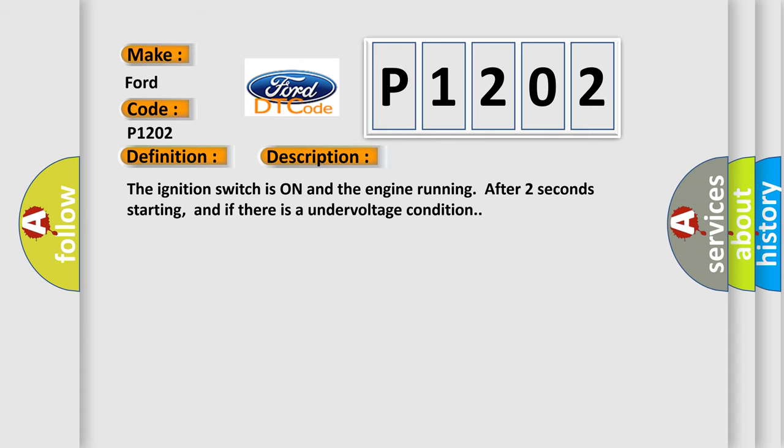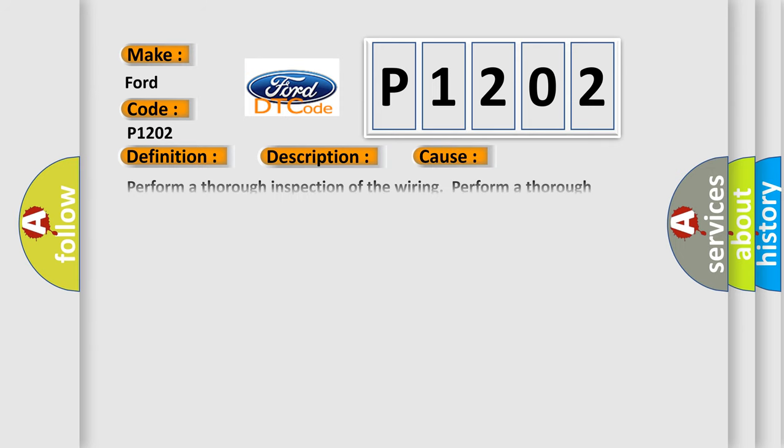And now this is a short description of this DTC code. The ignition switch is on and the engine running after two seconds starting, and if there is an undervoltage condition. This diagnostic error occurs most often in these cases. Perform a thorough inspection of the wiring. Perform a thorough inspection of the connectors. Failure to carefully and fully inspect the wiring and the connectors may result in misdiagnosis. Misdiagnosis causes part replacement with reappearance of the malfunction.